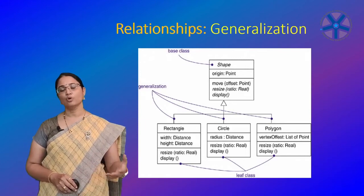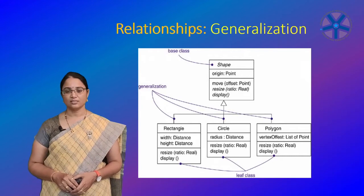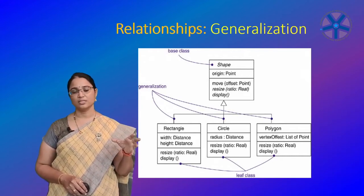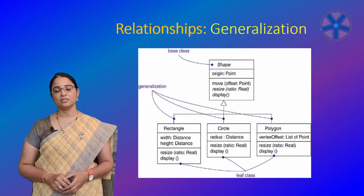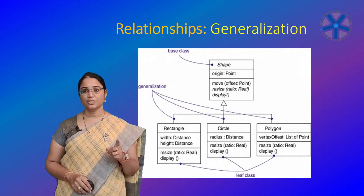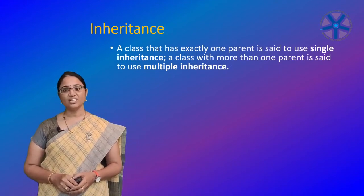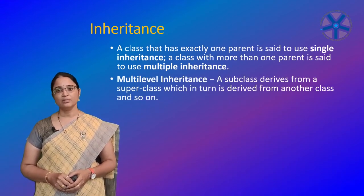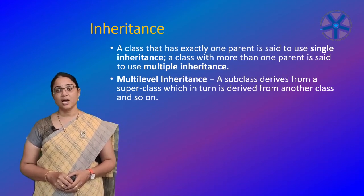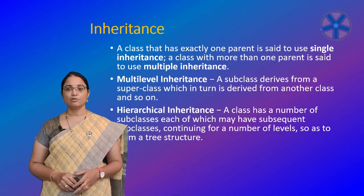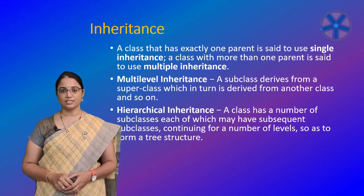A class may have zero, one, or more parents. A class that has no parents but one or more children is called a root class — also known as the parent class or base class. A class that has no children is known as a leaf class. A class that has exactly one parent is known as single inheritance. A class with more than one parent is known as multiple inheritance. Multi-level inheritance means a subclass derives from a superclass which in turn derives from another class.